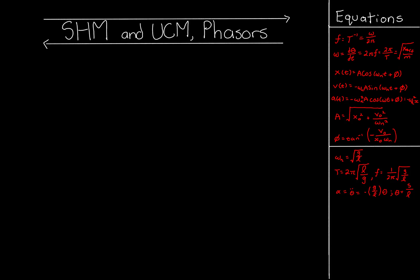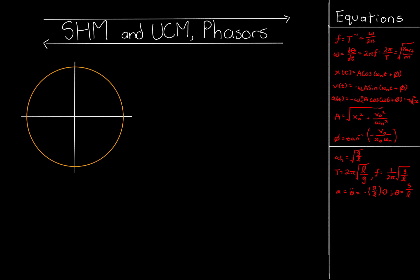To start, let's define a circle for the uniform circular motion — it doesn't have to be a unit circle, it could be any circle. We have a point P on this circle, and we call the vector from the origin to point P a phasor, spelled P-H-A-S-O-R. A phasor is a rotating vector that models things like displacement, velocity, or acceleration.